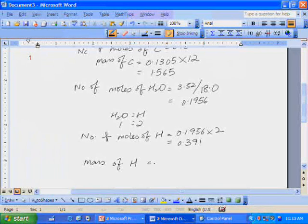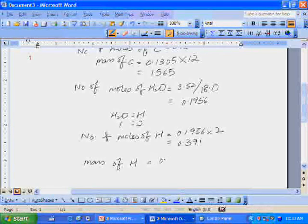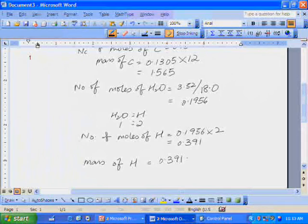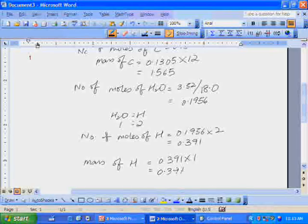The mass of hydrogen in the 3 gram sample is 0.391 times 1, which is the atomic mass of hydrogen, giving 0.391 grams.